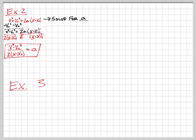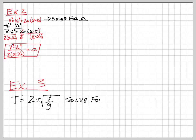Here's the last example we'll do right now. T = 2π√(L/G). And just to be mean, I'm going to make you solve for G. I think it would be a good idea if you paused the video right now and tried it on your own first, then checked yourself. Go ahead and pause, finish it, and then hit play.